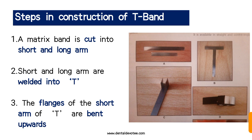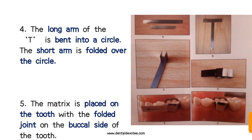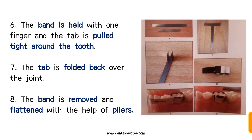The long arm of the T is bent into a circle and the short arm is folded over the circle. After placing it onto the tooth, the folded joint is positioned on the buccal side of the tooth and pulled to make it tight.